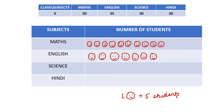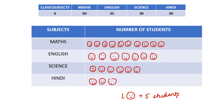Similarly, for Science there are 30 students, so draw 6 symbols: 1, 2, 3, 4, 5, 6. And for Hindi also there are 30 students, so again 6 symbols: 1, 2, 3, 4, 5, 6. This is the required pictograph.